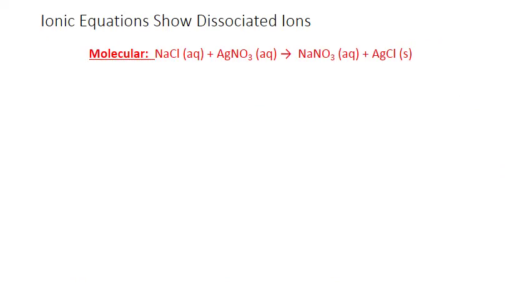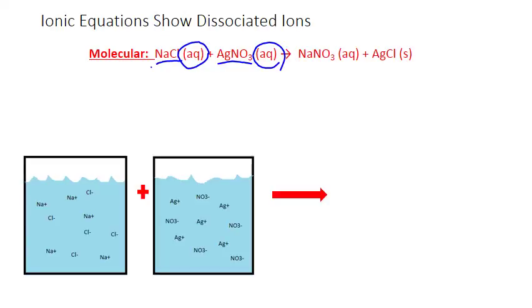When electrolytes react in solution, it's really the dissociated ions that interact and form new compounds. Let's look at an example of two ionic compounds reacting with each other: sodium chloride and silver nitrate. In order for these substances to interact, they must be dissolved in water, as indicated by the (aq) following them. They're soluble compounds, meaning they dissociate into free-floating ions in solution.